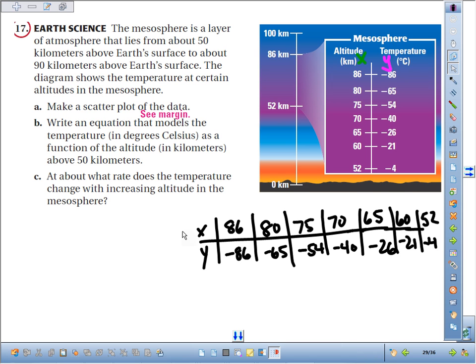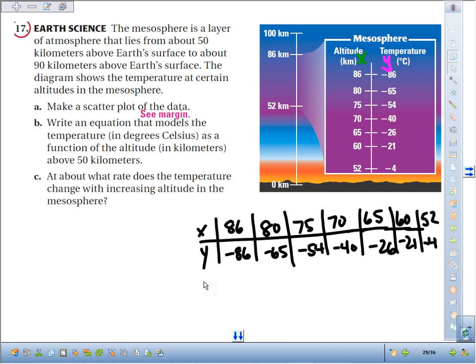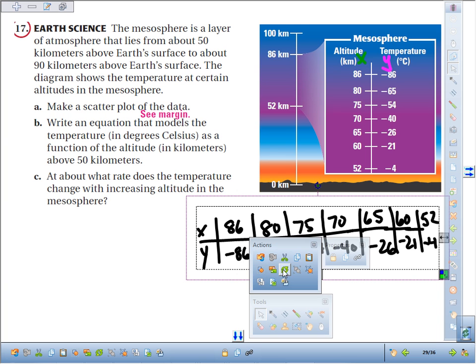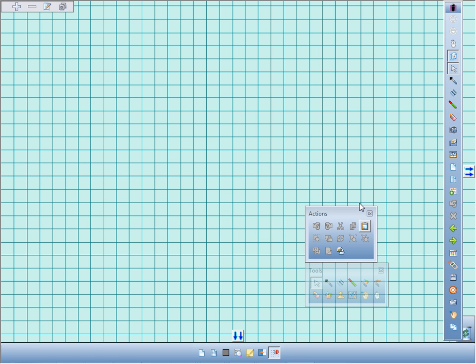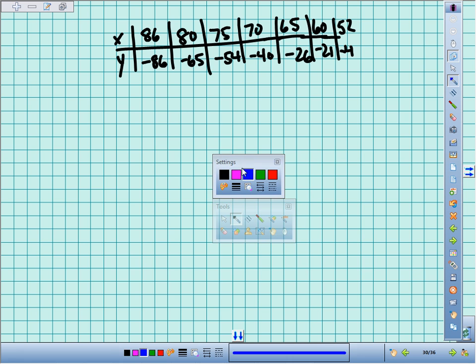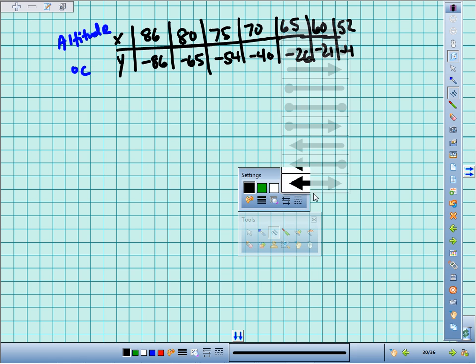So what I'm going to do is I'm going to take that data and put it into a graph. I'm going to make a scatter plot. Just so we don't lose track of what we're looking at, x is our altitude.